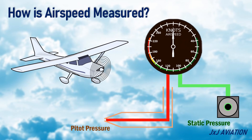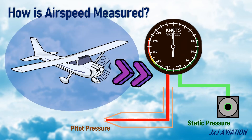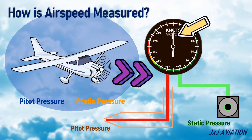The pitot pressure, or impact pressure, increases when an aircraft moves forward. The static pressure is the pressure of the undisturbed air around an aircraft. The airspeed indicator measures the difference between the static pressure and the pitot pressure. This difference moves a pointer on a scale which indicates the airspeed of the aircraft.